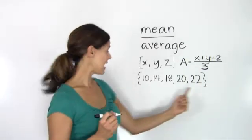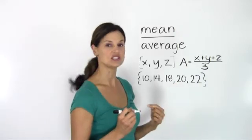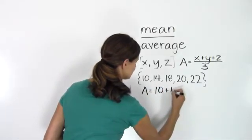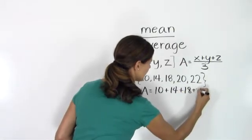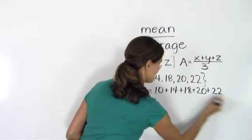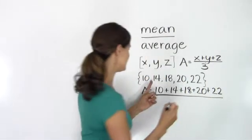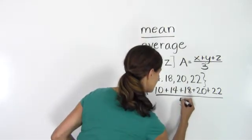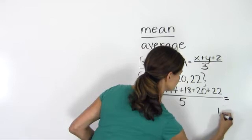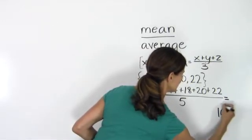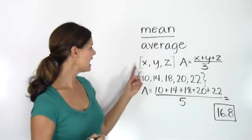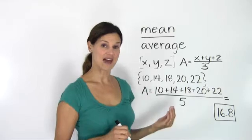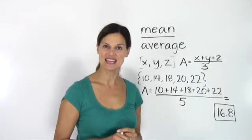In this example, where I have the values {10, 14, 18, 20, 22} in my set, I add those all together to find the average. So 10 + 14 + 18 + 20 + 22, and I divide by the number of values in my set: one, two, three, four, five. I divide that total sum by five, and I end up with a value of 16.8 as my average or mean, even though 16.8 isn't one of my values.